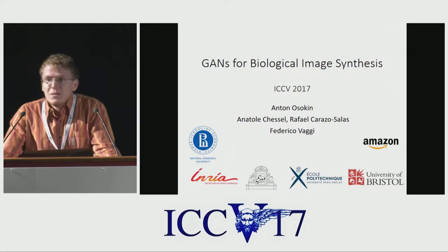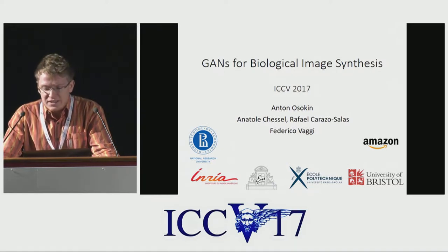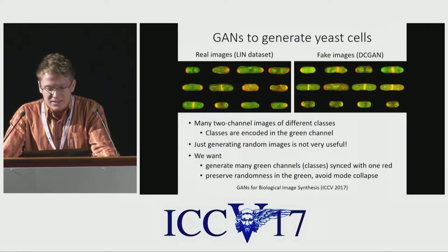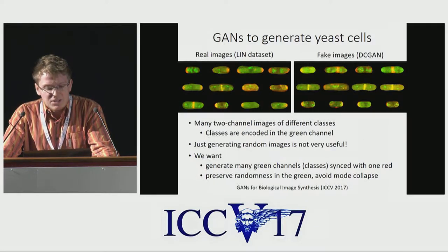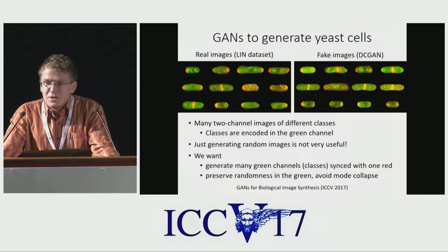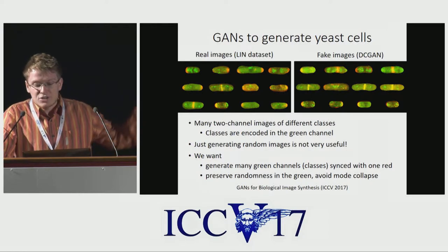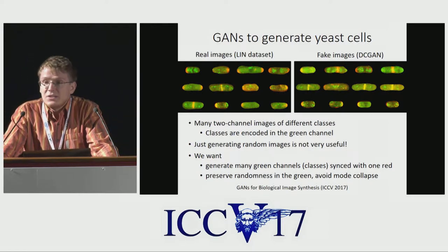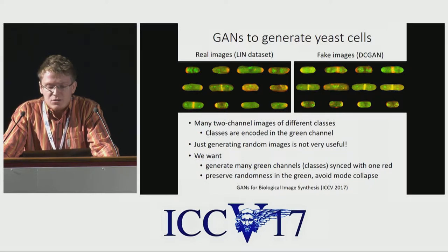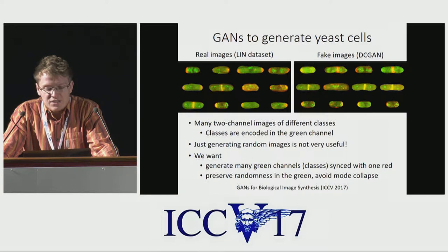As of today, biology has many different imaging techniques that can produce a lot of data. Such images are very different from natural images but are also very interesting and important to analyze. To give you an example, I am showing you some images of fish and yeast cells obtained with a technique called fluorescence microscopy. This technique can capture the amount of different proteins at different locations of the cell. In these images, the red and the green channels correspond to some proteins that are of interest for biologists.